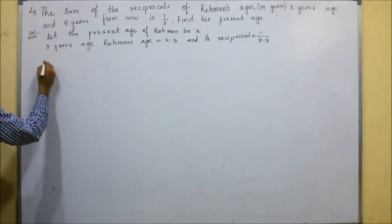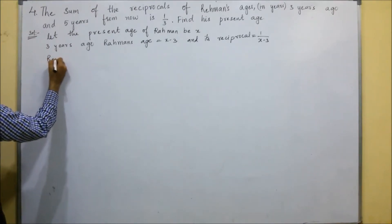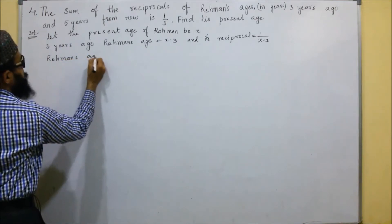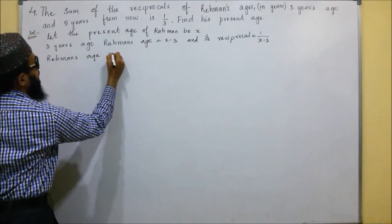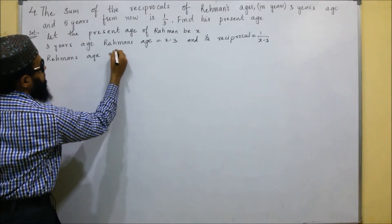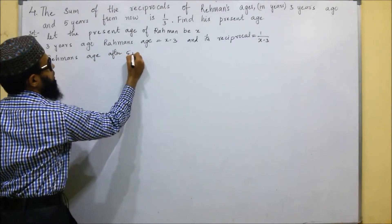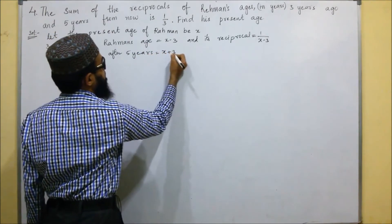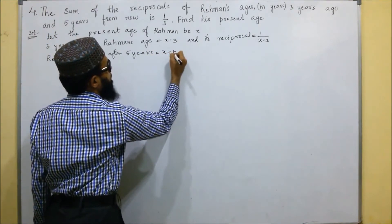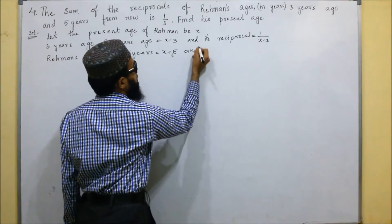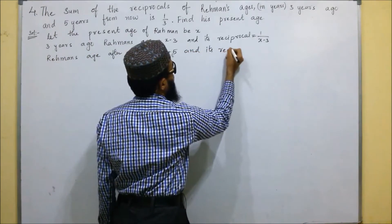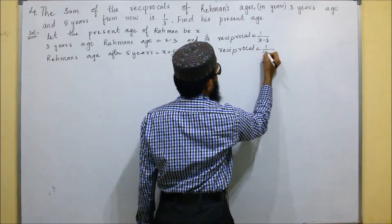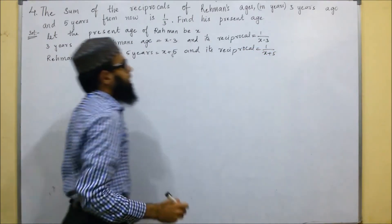After five years, Rahman's age will be X plus five, and its reciprocal is one by X plus five.